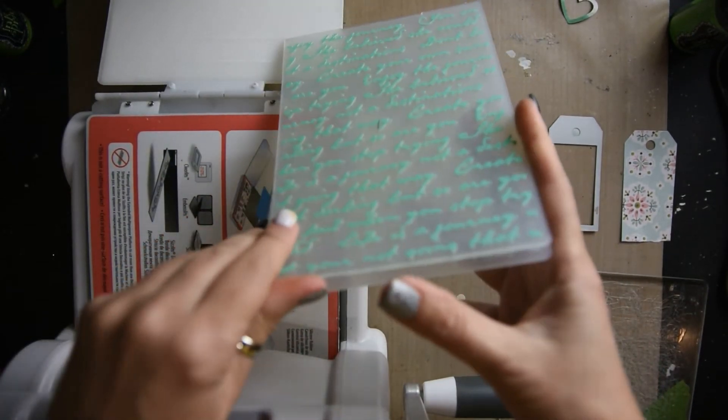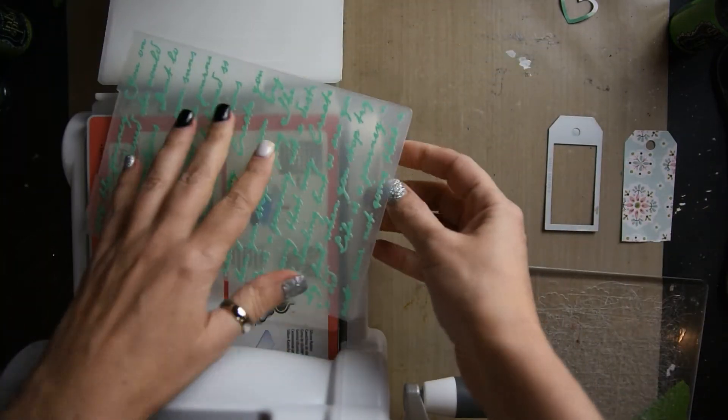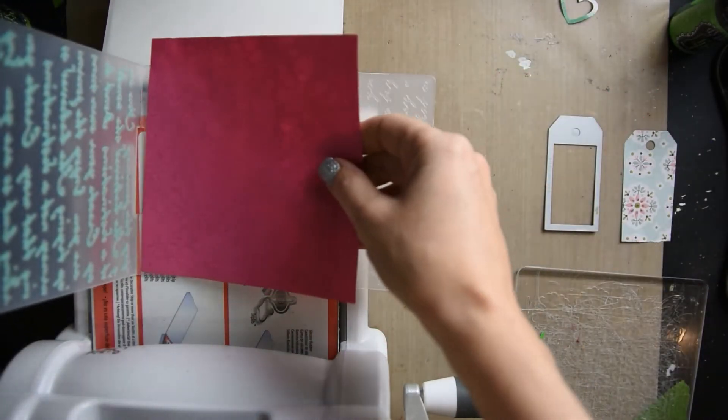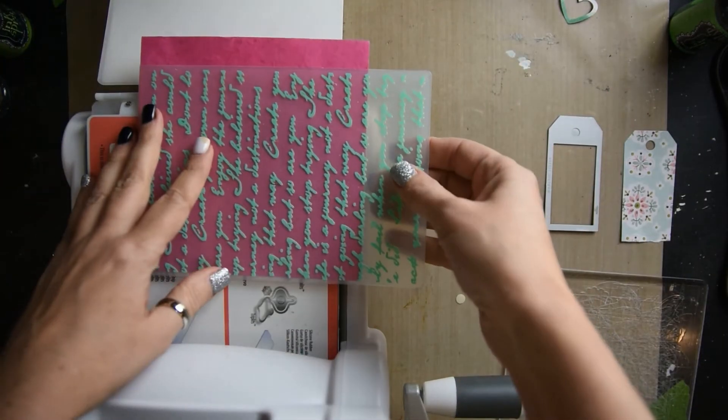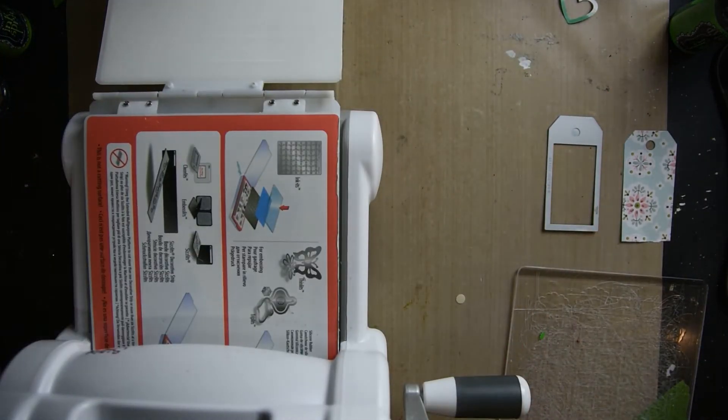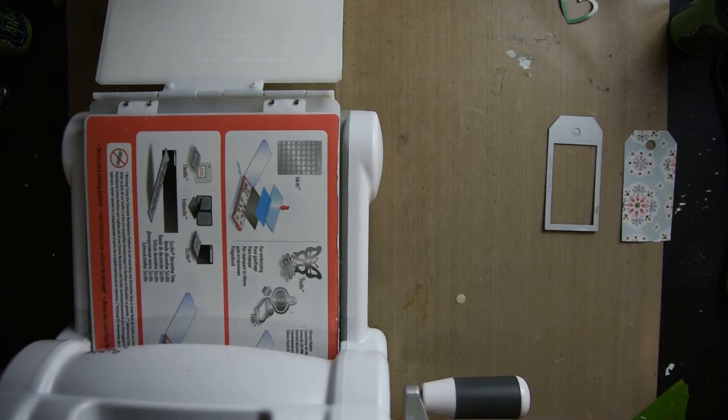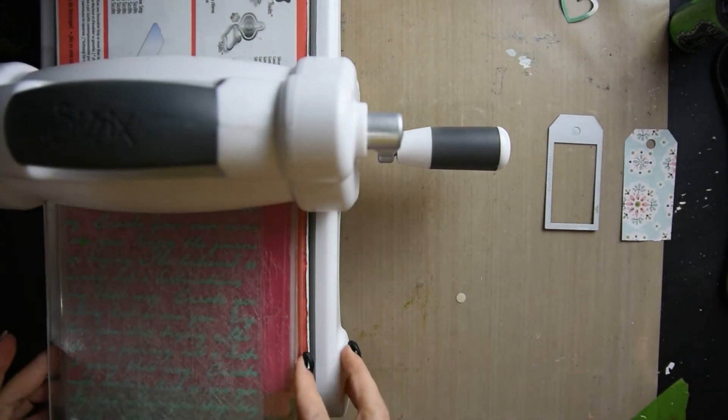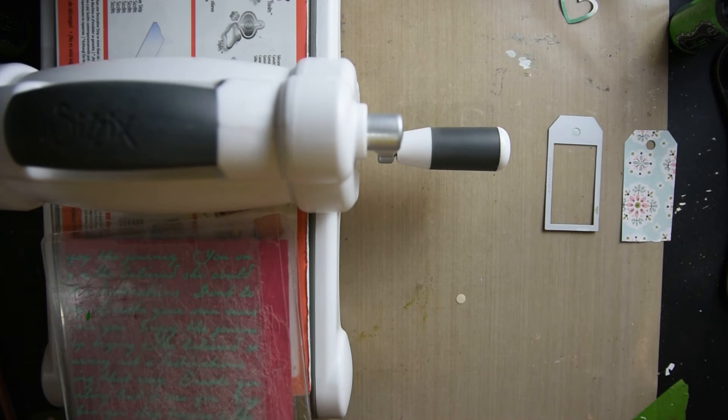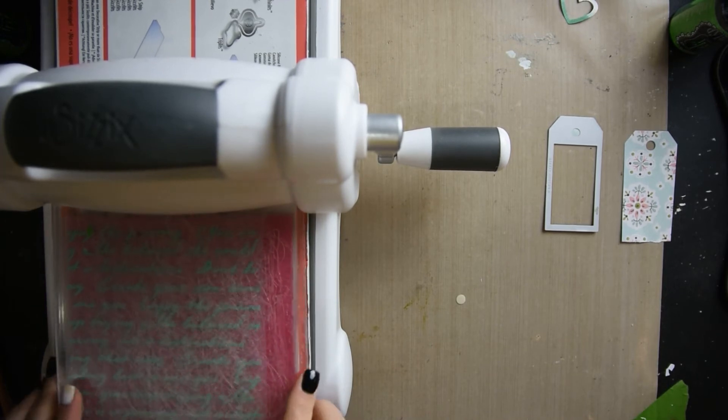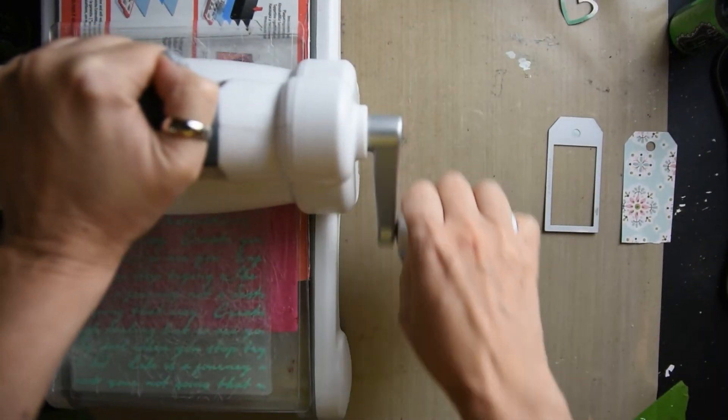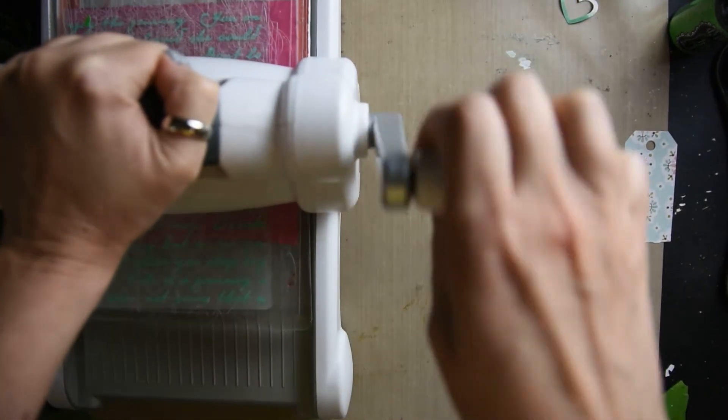Now I'm going to show you how to use an embossing folder. On the Sizzix, it actually has instructions for which layer does what—which cuts the die cut and which does the embossing folders. Now I'm taking the two plastic sheets and putting my embossing folder in between, and I'm just spinning it through.